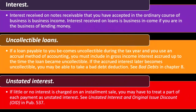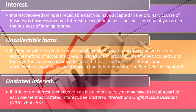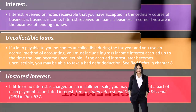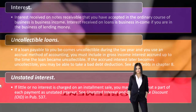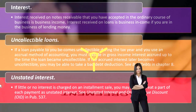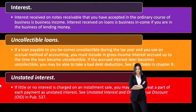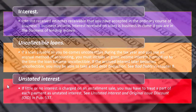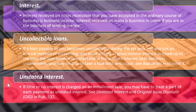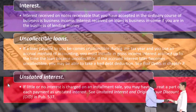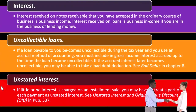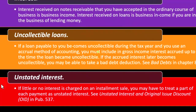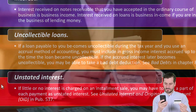Unstated interest: if little or no interest is charged on an installment sale, you may have to treat a part of each payment as unstated interest. If you set up a long-term payment agreement, interest must be taken into account — otherwise it wouldn't make sense from an arm's-length transaction perspective. We know that receiving a hundred dollars today is preferable to a hundred dollars a year from now because of the time value of money. Even if you were guaranteed to receive the hundred dollars in the future, you'd prefer it today because you could invest it.